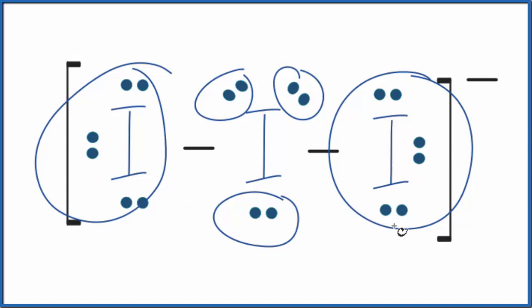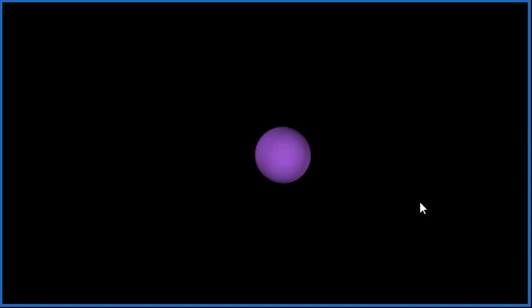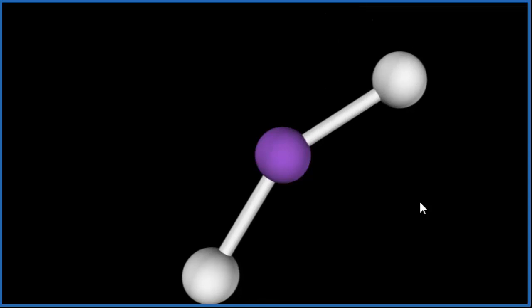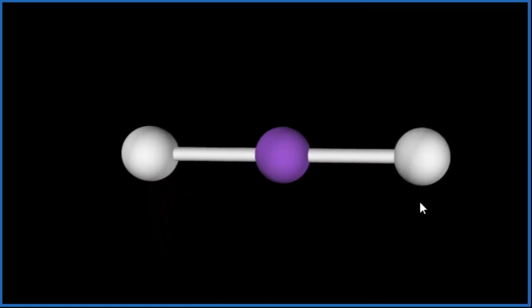Let's visualize that. So the purple, that's the iodine in the center. We're going to add two other iodine atoms, one, two, and you can see they spread out. They push away from each other.